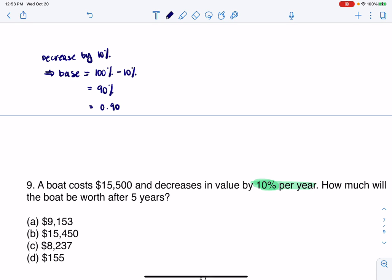Just for fun, if this had said increasing by 10%, I would have done 100% plus 10%, so my base would be 110% or 1.1. Anytime the base of your exponential function is larger than 1, you're talking about exponential growth. In our case, the base is less than 1, so we have exponential decay. When your base equals 1, it's neither growth nor decay.